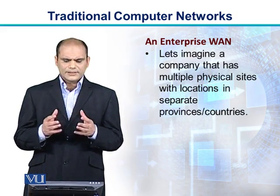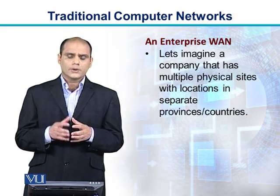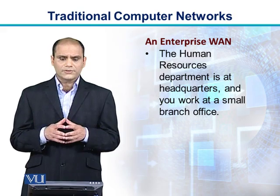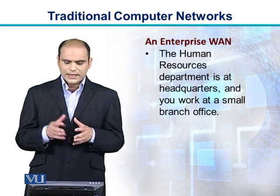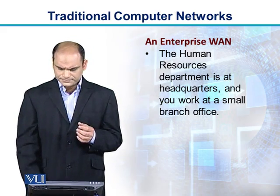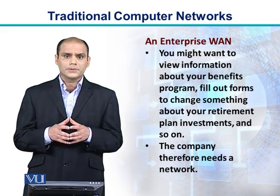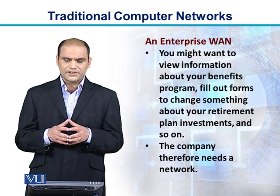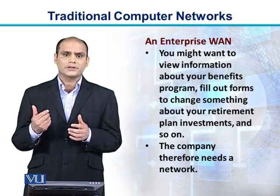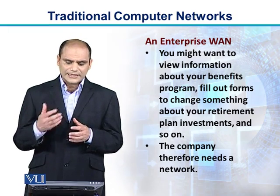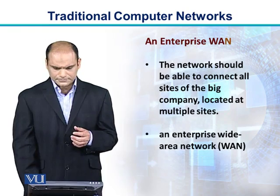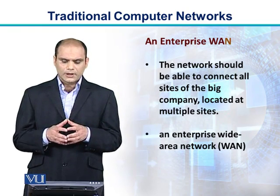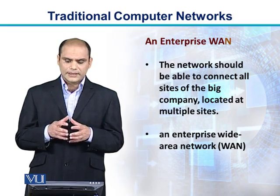An enterprise network — let's imagine a company that has multiple physical sites with locations in separate states, separate provinces, and maybe separate countries. The human resources department is at the headquarters, and let's say we are working at a small branch office. If we want to view information about our benefits, or fill out some forms to change something about our retirement plan investments, and we are located far away from the head office, we need a network. The company needs a network that can connect all sites, which we call an enterprise wide area network, or WAN.